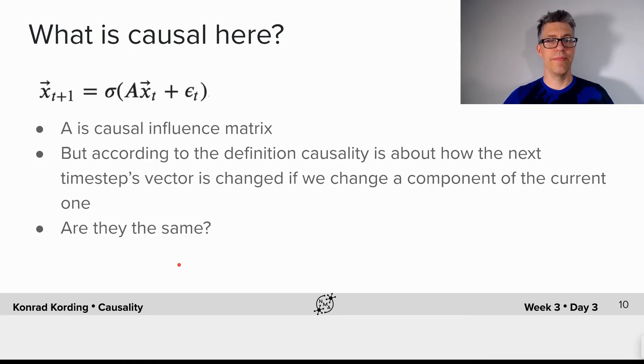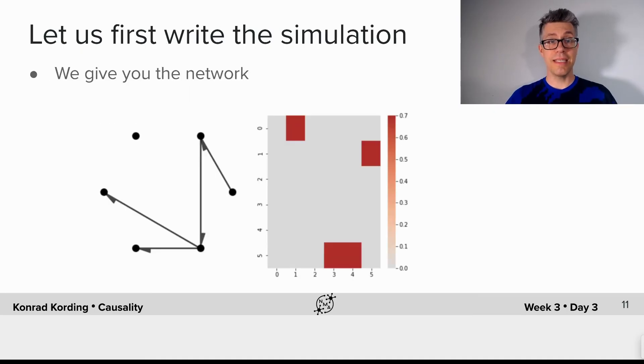So what's causal here? A is the causal influence matrix but according to the definition of causality it's about how the next time step's vector is changed if we change a component of the current one. Will the two of them be the same? Well let's test this.